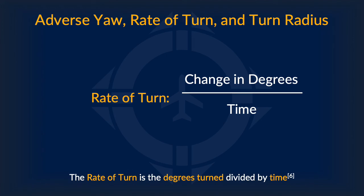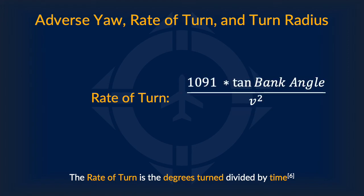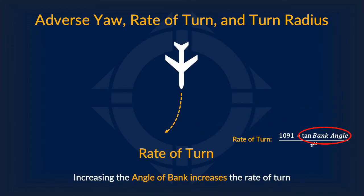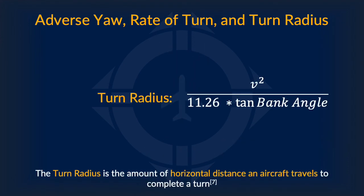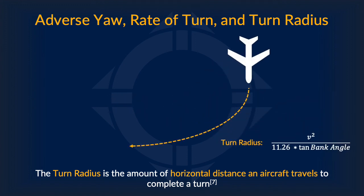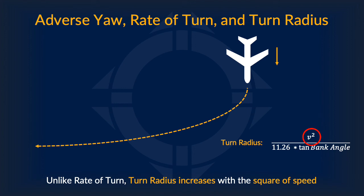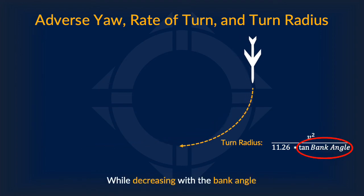Now we move on to the rate of turn, which is simply the degrees turned divided by time. Here is the formula for the rate of turn. As you increase the angle of bank, the rate of turn increases as well, which is reflected by the formula. Inversely, increasing the airspeed decreases the rate of turn. On the other hand, the turn radius is the horizontal distance traveled in completing a turn. Unlike rate of turn, the turn radius increases with the square of speed while decreasing with bank angle.